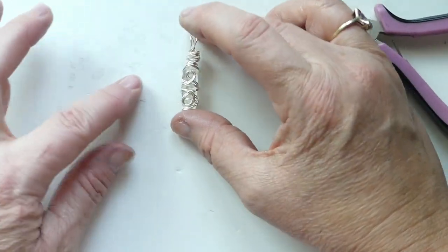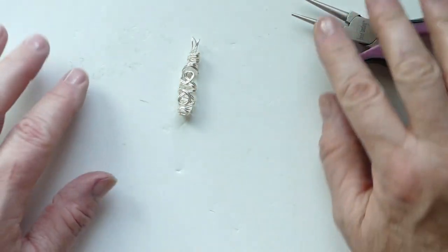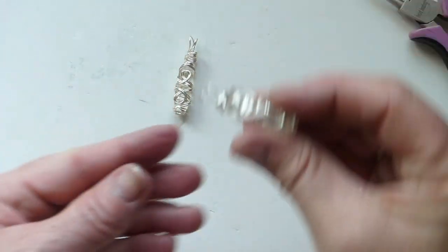And then I'm going to open these up so that our bail has two distinct loops. And just like that, we have wrapped our crystal point.